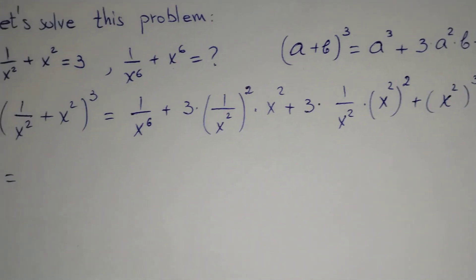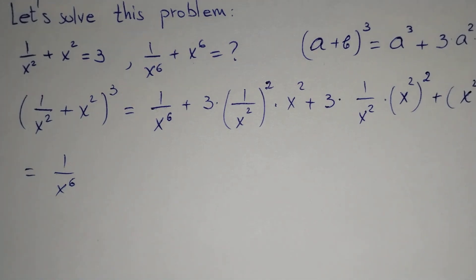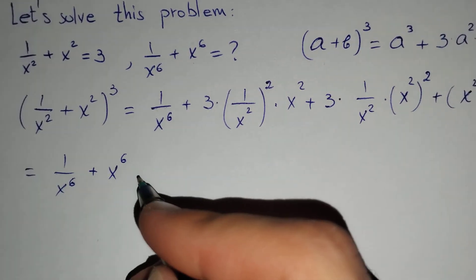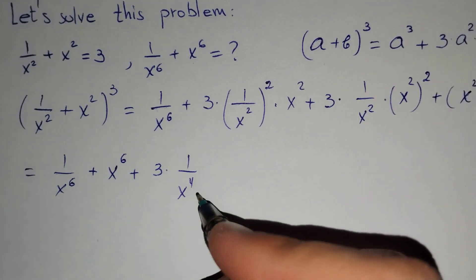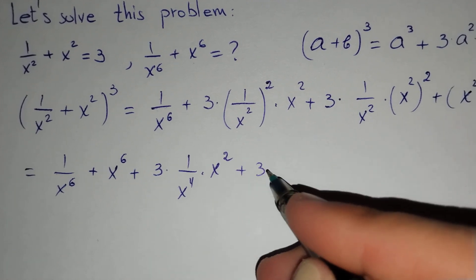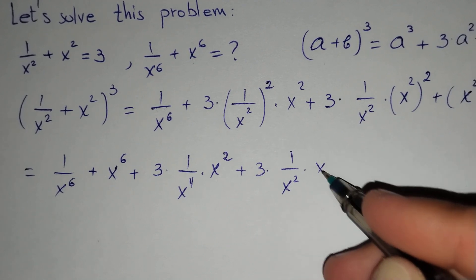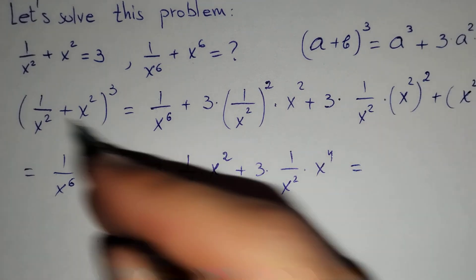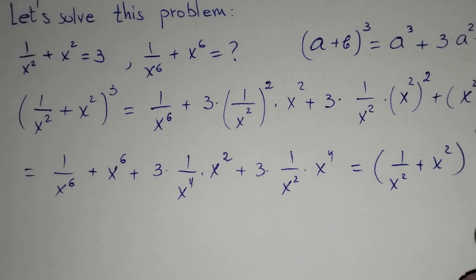This is equal to 1 over x to the power 6 plus x to the power 6, plus 3 times 1 over x to the power 4 times x to the power 2, plus 3 times 1 over x squared times x to the power 4. And this is equal to (1 over x squared plus x squared) to the power 3.